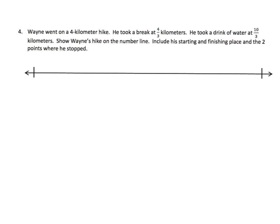And then the last problem for this video, Wayne went on a 4 kilometer hike. He took a break at 4 thirds of a kilometer, right here. He took a drink of water at 10 thirds kilometer. Show Wayne's hike on the number line. Include the starting and finishing place. And the two points where he stopped. Okay, well, since this is a 4 kilometer hike, we need to go from 0 to 4. So there's 0 to 4.